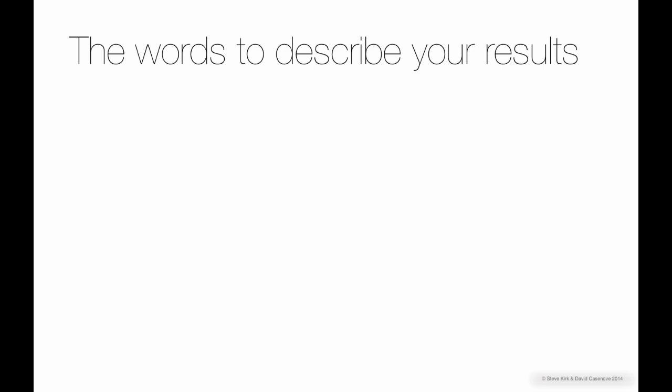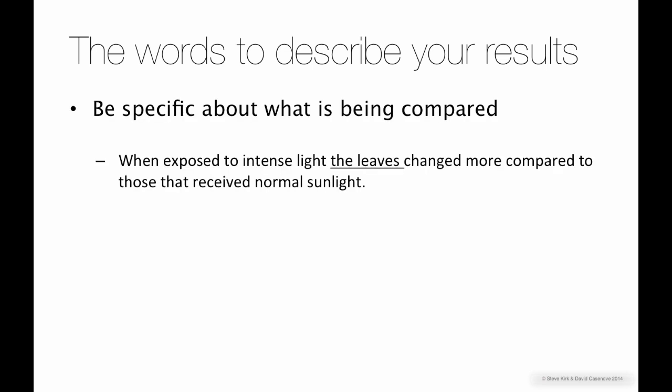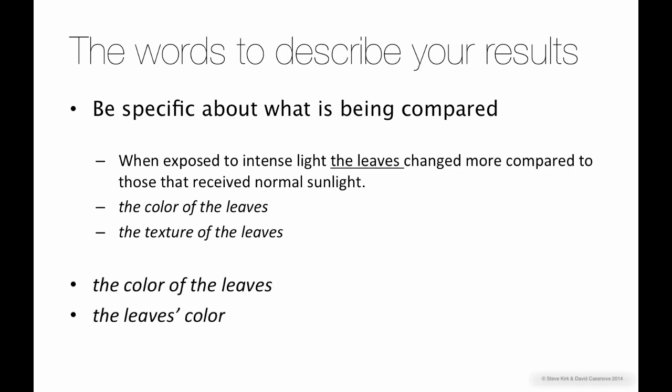Also you need to be specific about what you're talking about. In this example, it says the leaves changed more compared to those that received normal sunlight. But what about the leaves? We should write something like the color of the leaves or the texture of the leaves. Notice that we write the color of the leaves and not the leaves' color. This is okay if it's a person or animal like the gorilla's color, but usually not for objects. This pattern, the something of the something, is very useful and used a lot in academic writing.